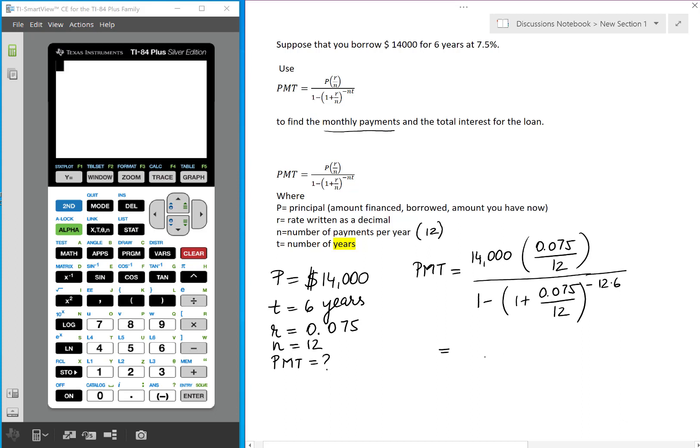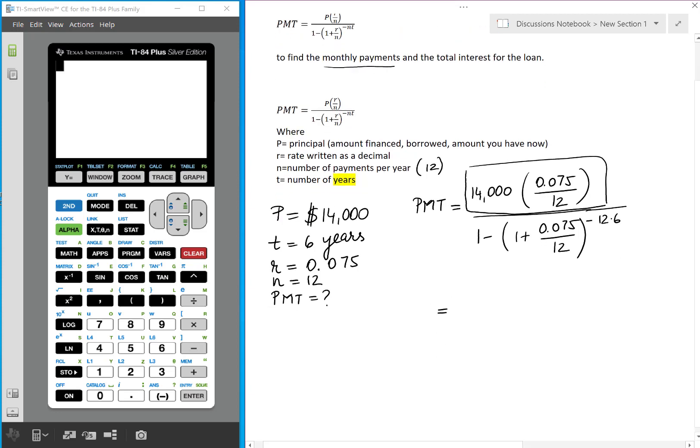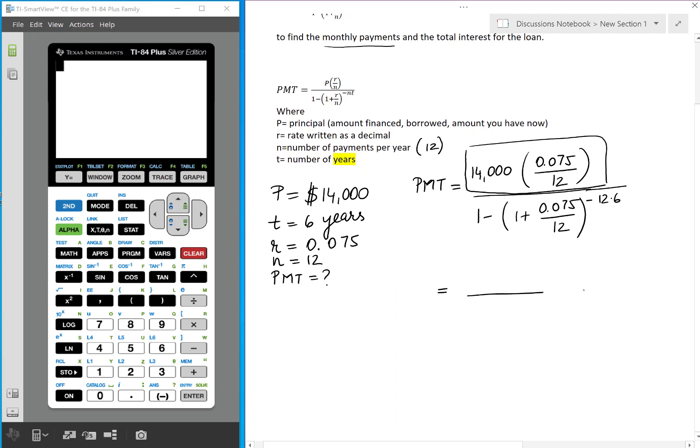I'm going to start with the numerator. So 14,000 times parentheses 0.075 divided by 12. Enter. And the numerator is 87.5.